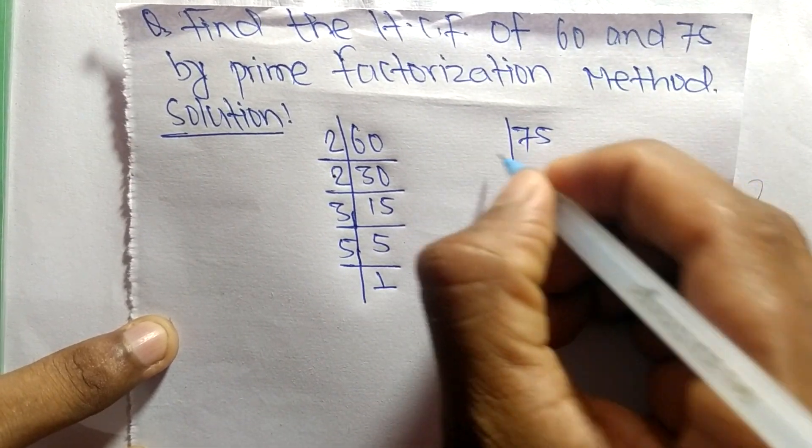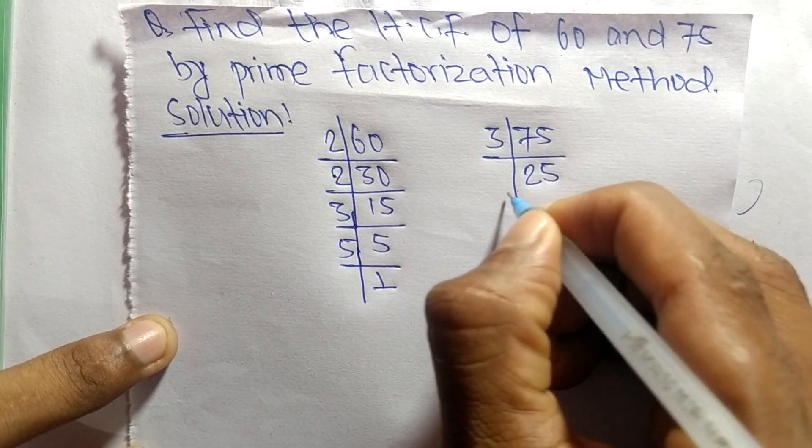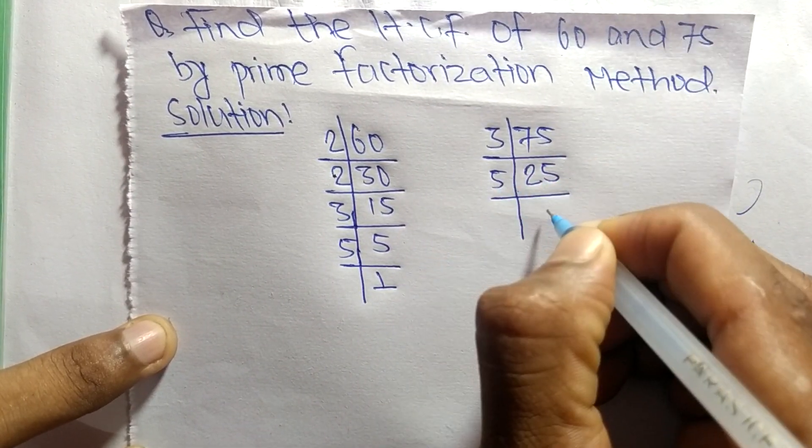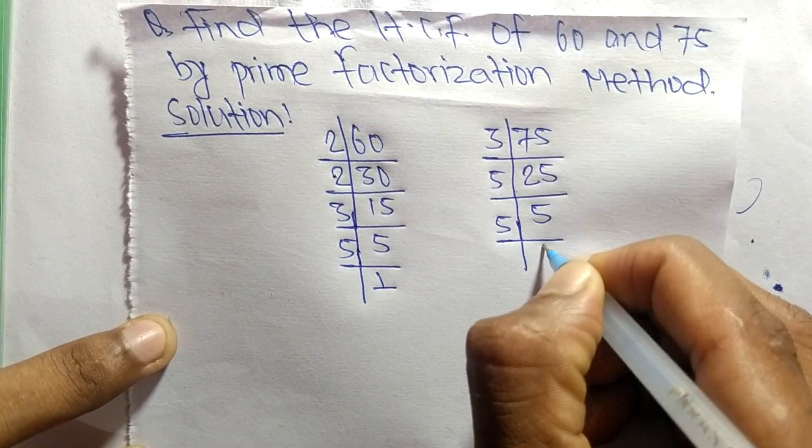The prime factors of 75 are: 3 times 25 equals 75, 5 times 5 equals 25, and 5 times 1 equals 5.